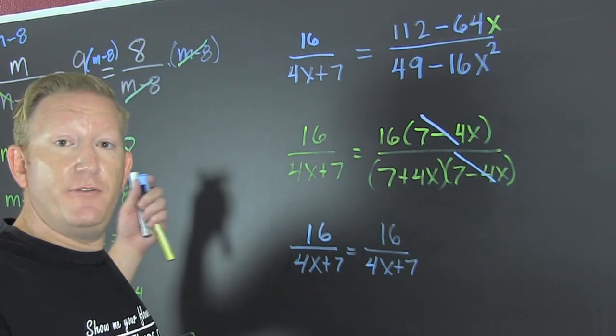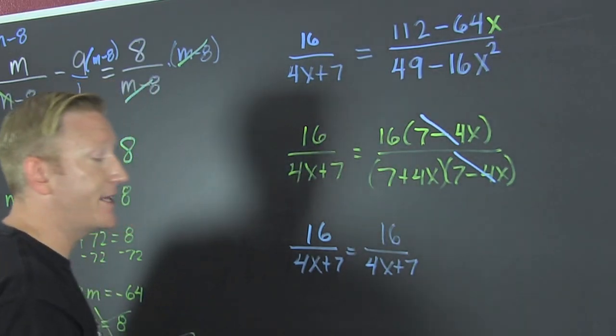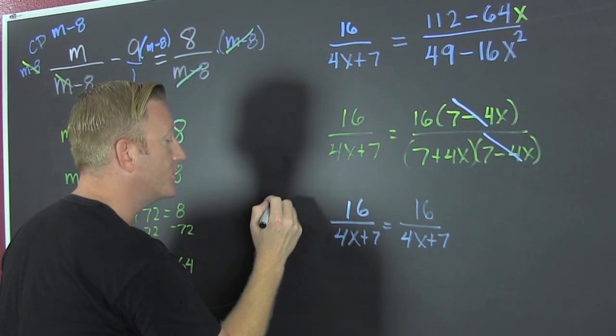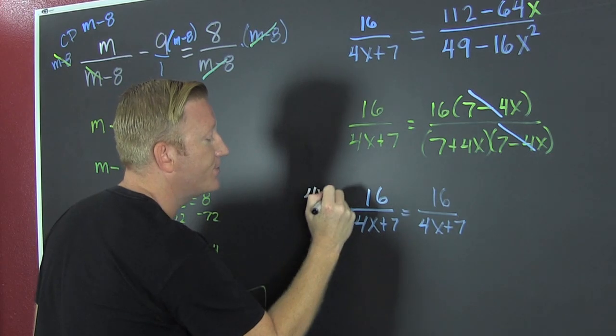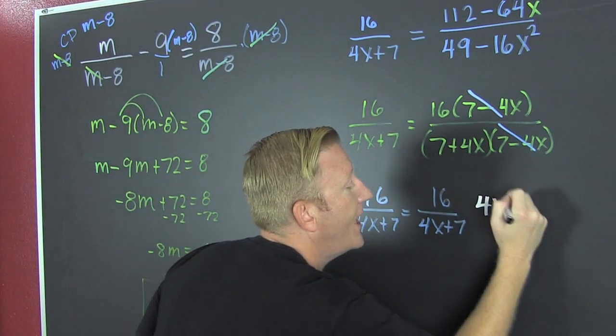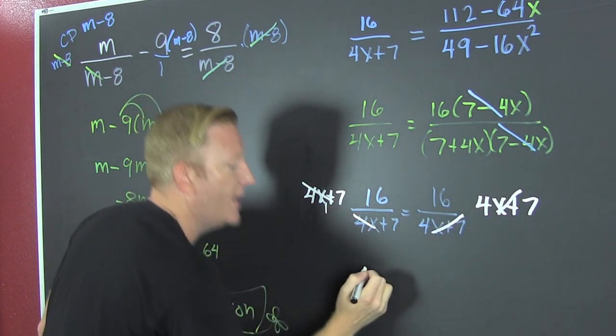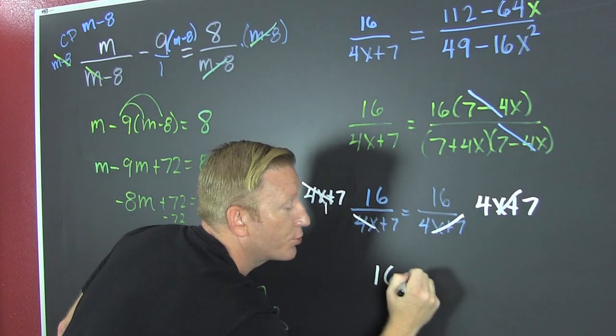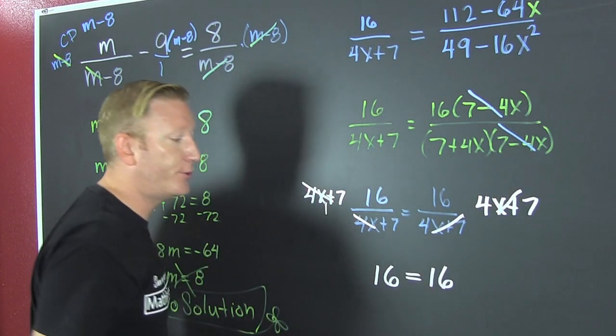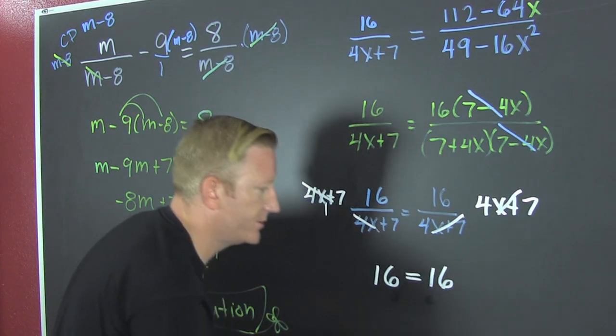So there's infinite solutions, but maybe you want to clear the fractions anyway, because that's just what you're trained to do. So you multiply by the common denominator of 4x plus 7. It's dripping. So what? So then that's a 4x plus 7. And then those reduce. And you get a true statement. True. And when it's true, then that's an infinite number of solutions.